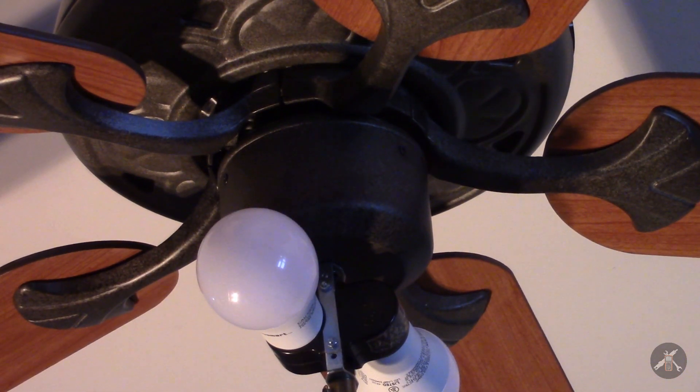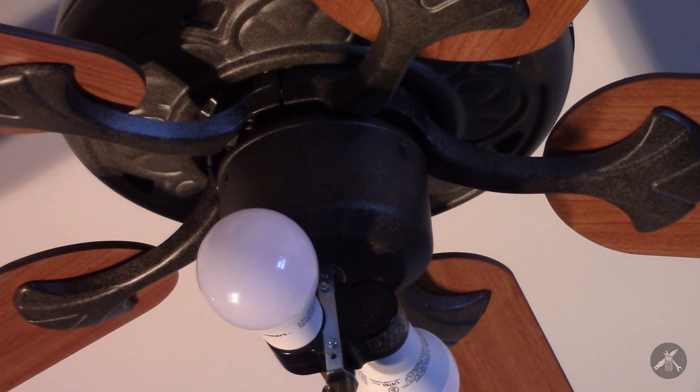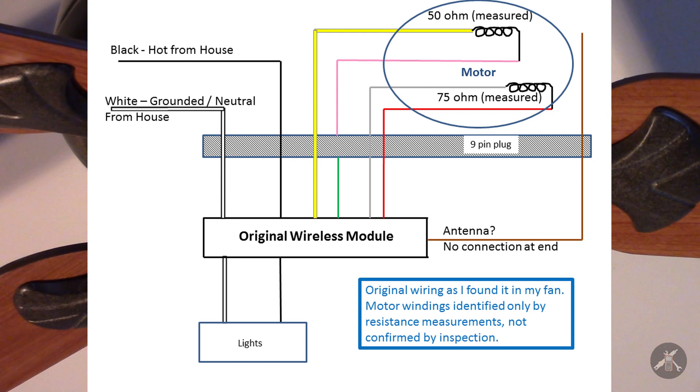Now, for my motor, color codes are kind of funny and I don't know that all the motors are the same. For mine, the black, the hot wire from the house, or the hot wire from this module for the motor, went to the yellow and the gray on the motor side of the connector. They did change colors across the connector in a couple places. So black went to yellow and gray, and the white went to the pink from the motor.